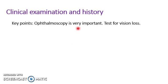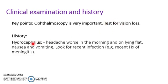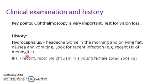For the clinical examination and history, ophthalmoscopy is extremely important. Test for vision loss in the peripheries or centrally in the cranial nerves exam. The history of hydrocephalus includes a headache that's worse in the morning or on lying flat, associated with nausea and vomiting, and they may have a recent infection such as a recent history of meningitis. For idiopathic intracranial hypertension, there may be recent rapid weight gain in a young female, which is one of the predisposing factors.